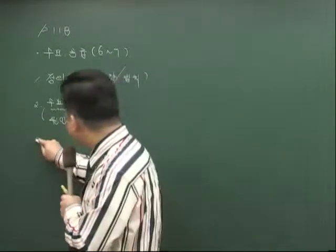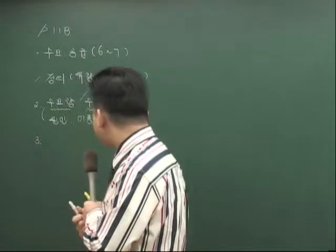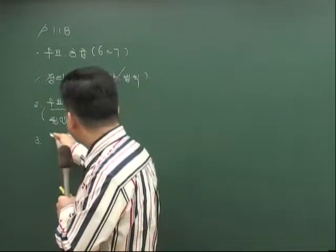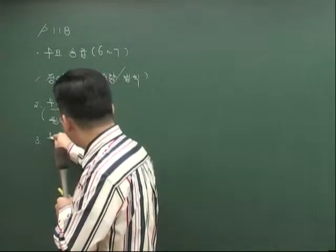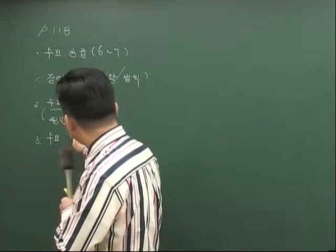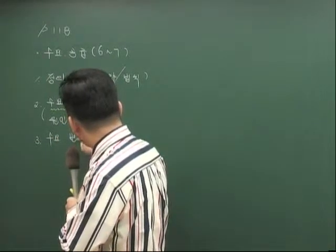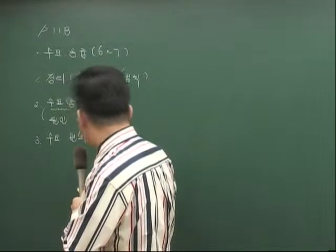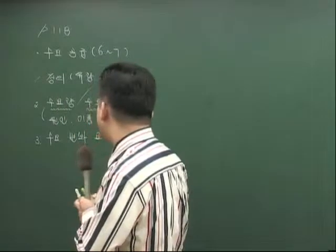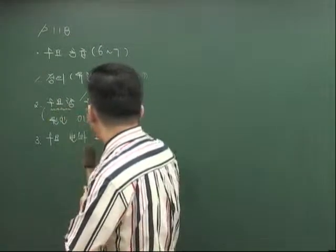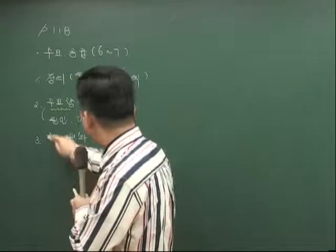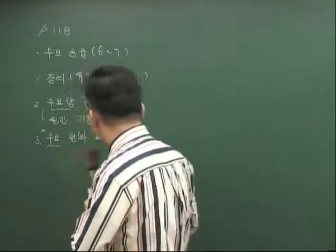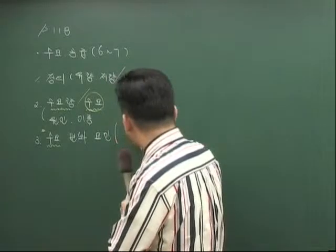세 번째는 수요 변화 요인에 대해서 공부하셔야 됩니다. 수요량을 변화시키는 요인은 해당 재화의 가격 하나밖에 없고, 수요를 변화시키는 요인은 해당 재화 가격 이외의 요인들이 있습니다. 특히 여기서 소득이라는 것이 있습니다.